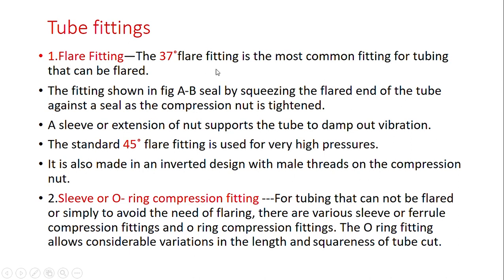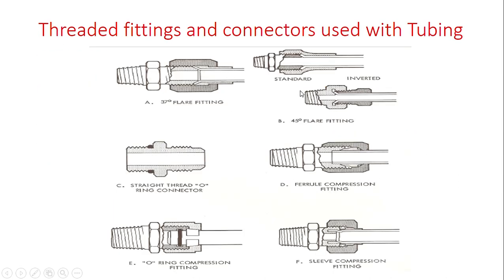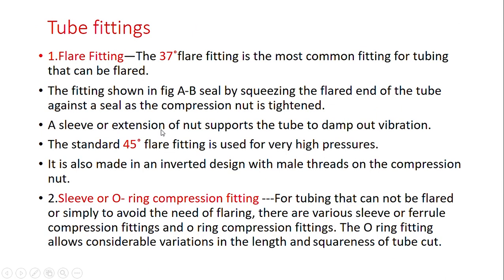The 37-degree flare fitting is the most common fitting for tubing that can be flared. The flared end of the tube is squeezed against a seal as the compression nut is tightened. The standard 45-degree flare fitting is used for very high pressure, and is also made in an inverted design with male threads on the compression nut.